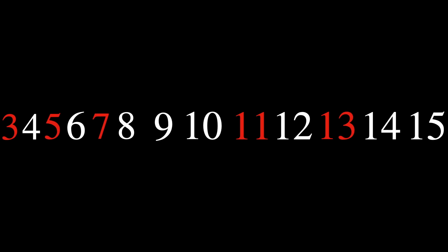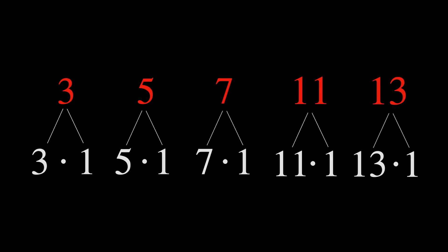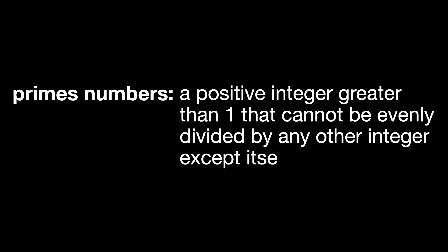But what about the other numbers that we didn't mention? These are the numbers which can only be written as a product of themselves. These are prime numbers. Its precise definition is a positive integer greater than 1 that cannot be evenly divided by any other integer except itself and 1. Except for 0 and 1, every natural number is either composite or prime.